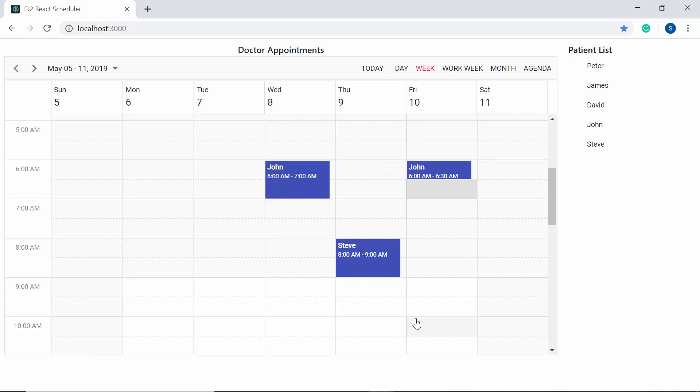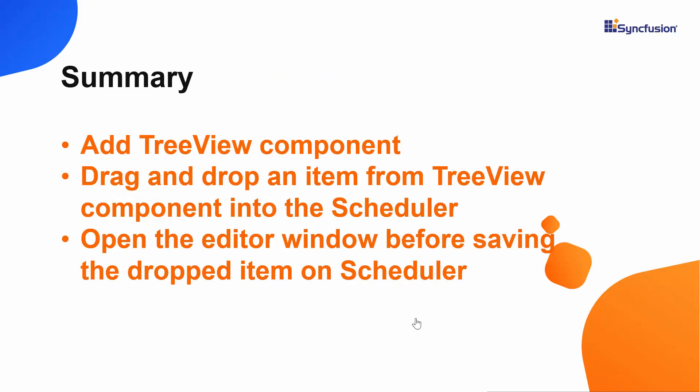So that's all about how to drag and drop an event from an external source into the Scheduler component. To summarize: we have seen how to add the TreeView component to an existing React application, how to drag and drop an item from the external TreeView into the React Scheduler, and how to open the editor window before adding the dropped event as an appointment. If you found this video useful, click the Like button and subscribe to our channel. Thank you for watching.